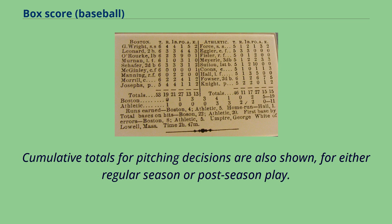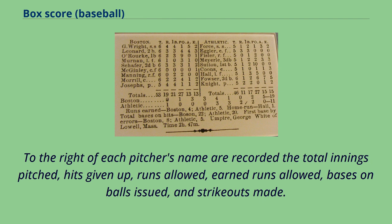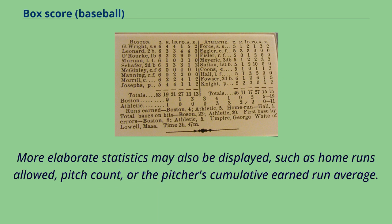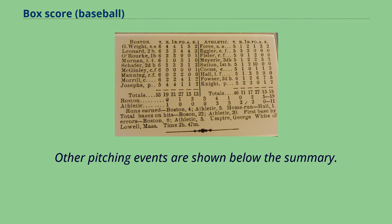Cumulative totals for pitching decisions are also shown, for either regular season or postseason play. To the right of each pitcher's name are recorded the total innings pitched, hits given up, runs allowed, earned runs allowed, bases on balls issued, and strikeouts made. More elaborate statistics may also be displayed, such as home runs allowed, pitch count, or the pitcher's cumulative earned run average. Other pitching events are shown below the summary.